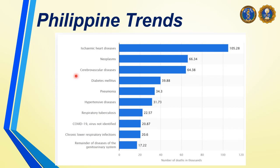Let's take a look at the trends of causes of mortality among Filipinos. The most common cause of death in the Philippines is ischemic heart disease — in layman's term, heart attack. Next are neoplasms, also known as cancer, followed by cerebrovascular disease, most commonly known as stroke. Next is diabetes mellitus, and the top five is pneumonia.